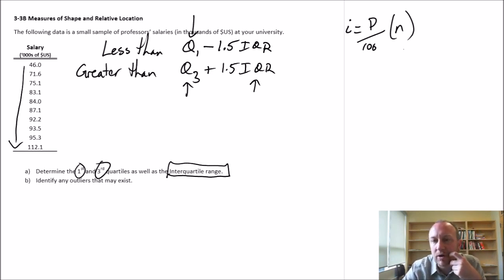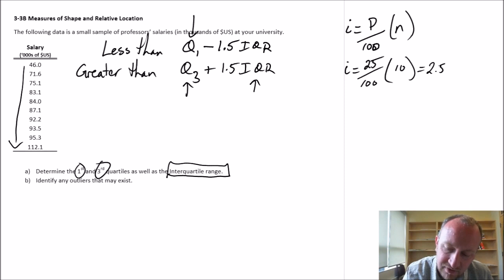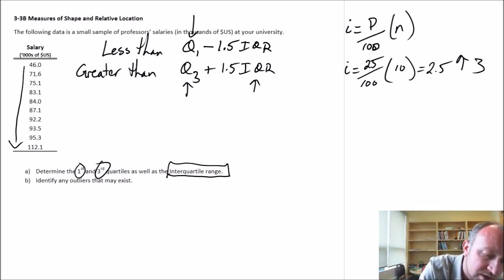The formula for the index was the percentile of interest divided by 100 times the sample size. So when we're looking at quartiles, the relevant percentiles would be the 25th percentile would be the first quartile, the 50th percentile would be the second quartile, the 75th percentile the third quartile. Just try saying that 10 times really fast! So for the first quartile, 25 divided by 100, our sample size here is 10, so this is going to be 2.5. If we have a non-integer value we round this up to 3, so my first quartile is in the third position.